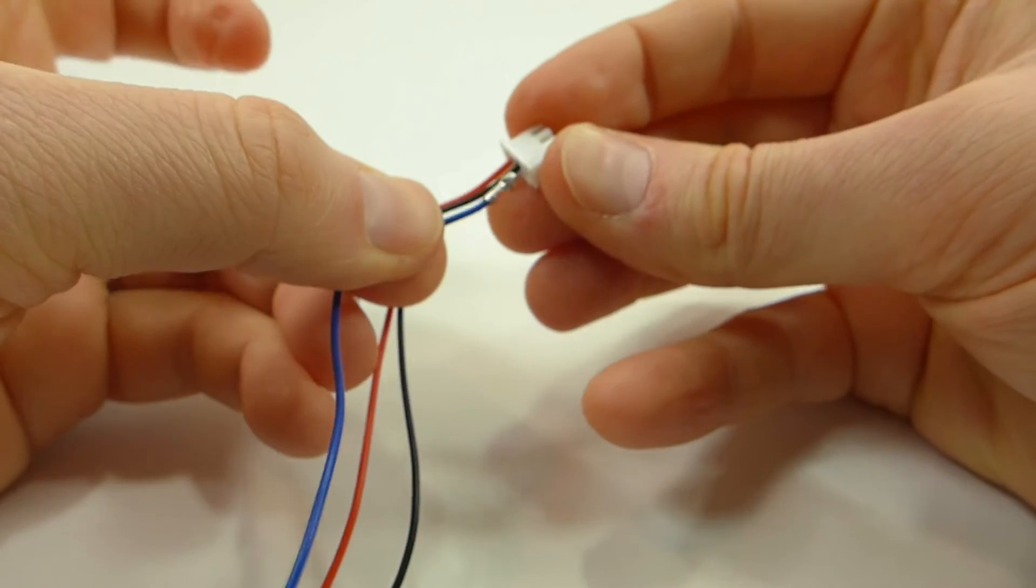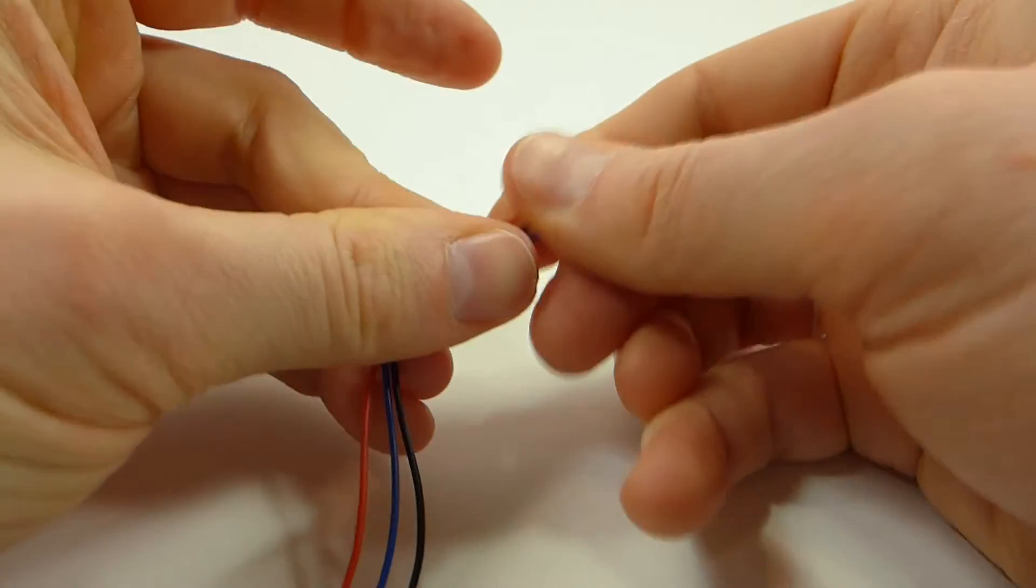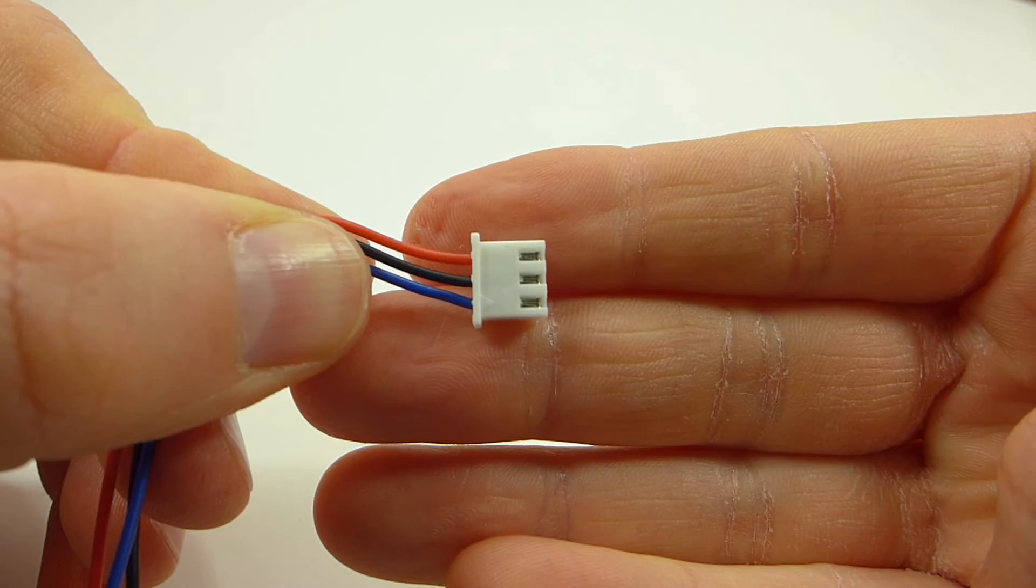You can get these JST XH plugs on eBay for cheap. Just do a search for JST XH three pin and you'll find them. So there it is.